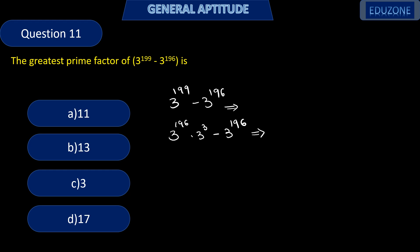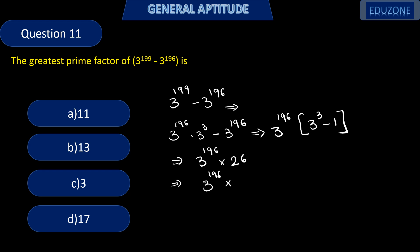3 raised to 196 can be taken as common, giving 3 raised to 196 into (3 cube minus 1). That is 3 raised to 196 into 26. Now, 26 can be written as 13 into 2. So the prime factors are 3, 13, and 2, out of which the greatest prime factor is 13 — option B.